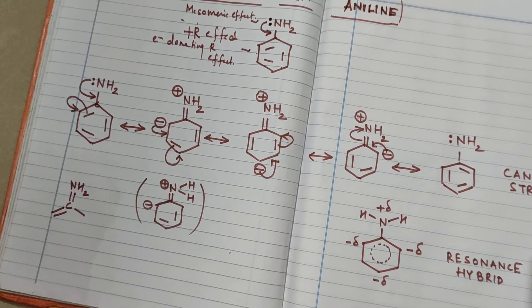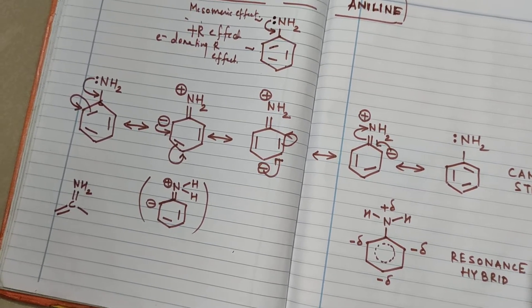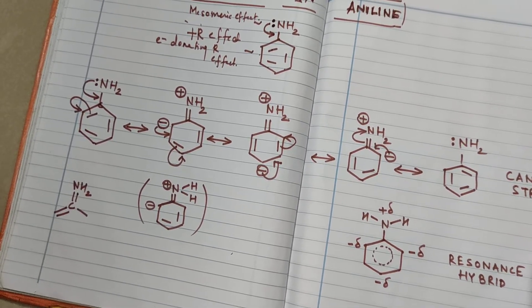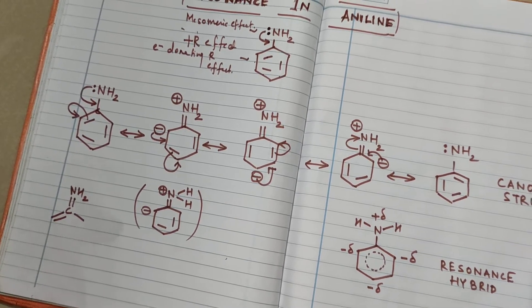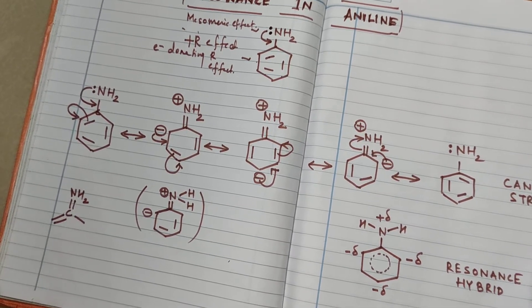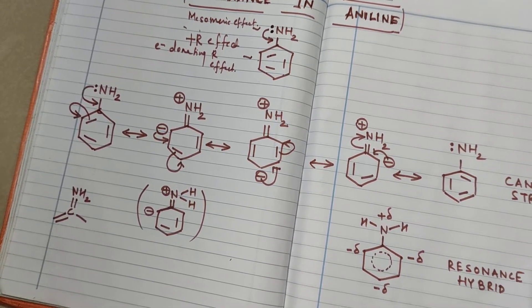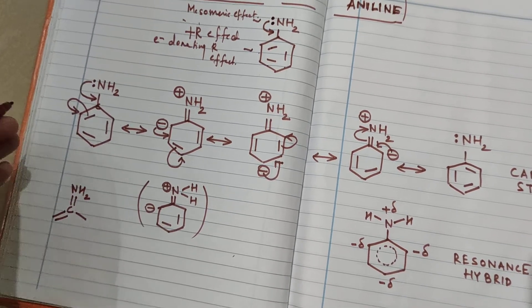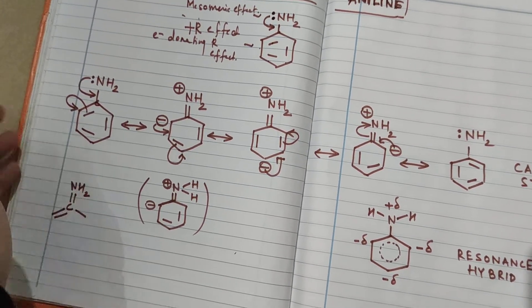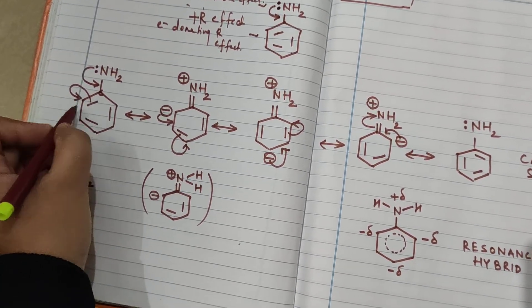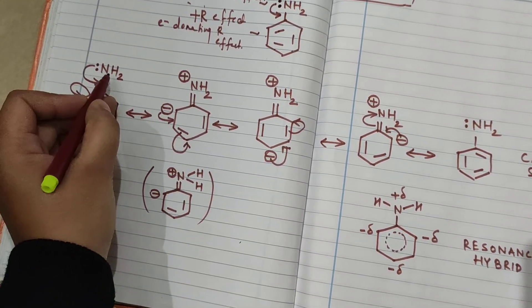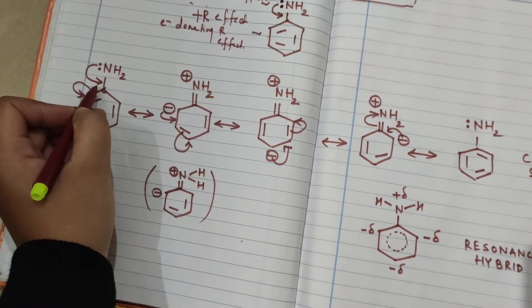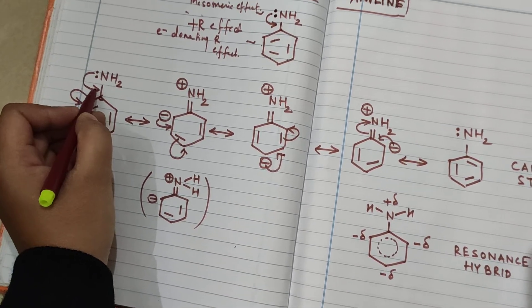We'll look at the structures showing how aniline exhibits resonance. First, why is aniline showing resonance? It is because whenever a molecule shows resonance, it is trying to move towards stability. In the first structure, we have a benzene ring with an NH2 group, and the lone pairs are going to be donated to the benzene ring.